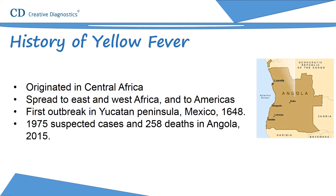Yellow fever virus probably originated in Central Africa, spread subsequently to East and West Africa, and was introduced into the Americas with the slave trade between the 16th and 19th centuries. The first recorded outbreak was in the Yucatan Peninsula, Mexico, in 1648. A recent outbreak was recorded in Angola starting in December 2015, with 1,975 suspected cases and 258 deaths reported.